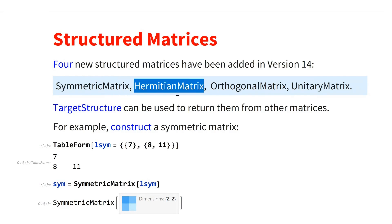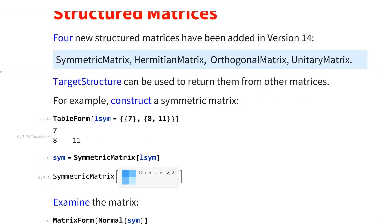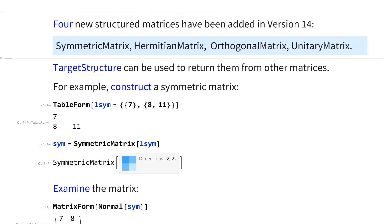HermitianMatrix, their complex cousins. OrthogonalMatrix, which combine rotations, et cetera. And UnitaryMatrix, which are their complex cousins. So these four matrices can now be used all over the system by using TargetStructure. So you have an orthogonal matrix, it can show up in lots of places using TargetStructure.